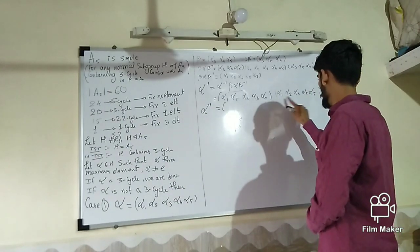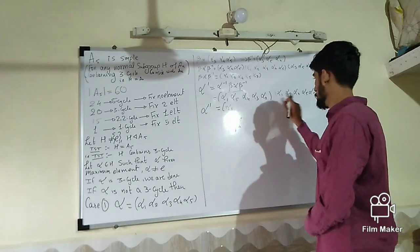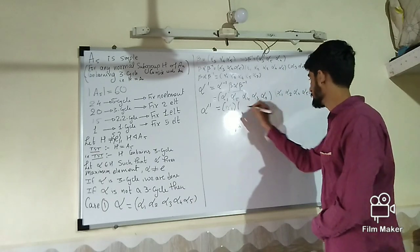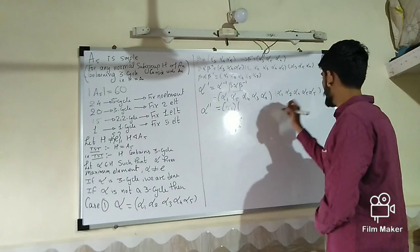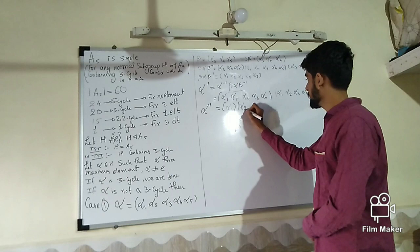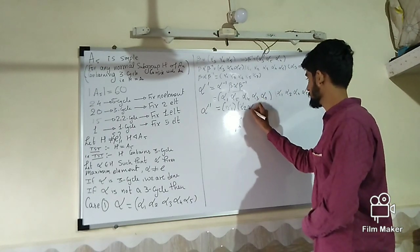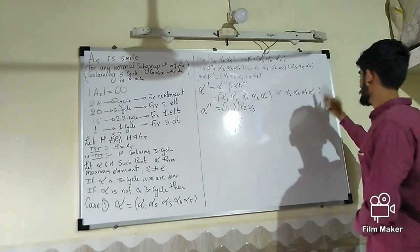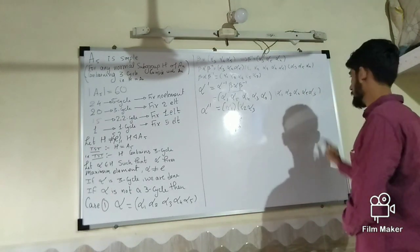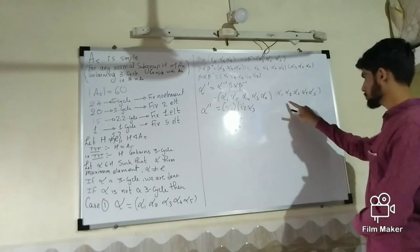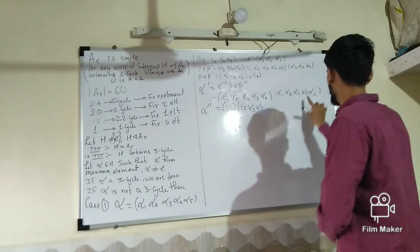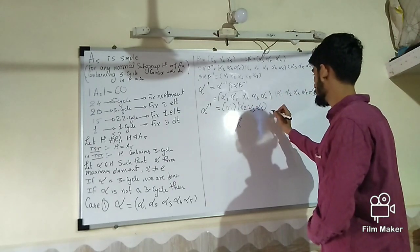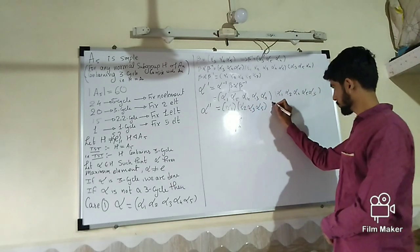Tracing the action of alpha-dash: α1 maps to α2, then α2 maps to α1, so α1 is fixed. We got something better than alpha. For α2: α2 goes to 4, 4 goes to 3, so α2 → α3. For α3: α3 goes to 1, 1 goes to 5, so α3 → α5. For α5: α5 goes to 3, 3 goes to 2, so α5 → α2. Thus alpha-dash fixes α1 and is not a 5-cycle.